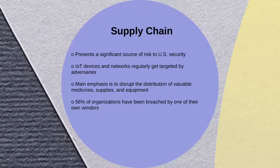Next, the supply chain vector presents a significant risk to U.S. security. These attacks are accomplished when an attacker infiltrates a system through a third-party partner or provider. IoT devices and networks regularly get targeted by adversaries in order to disrupt the distribution of valuable supplies and equipment.